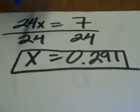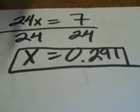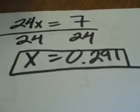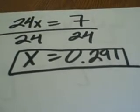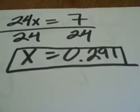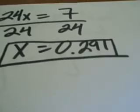Then you'll divide 24 from both sides. 24 to 24 cancels itself out. And 7 divided by 24 is 0.291.